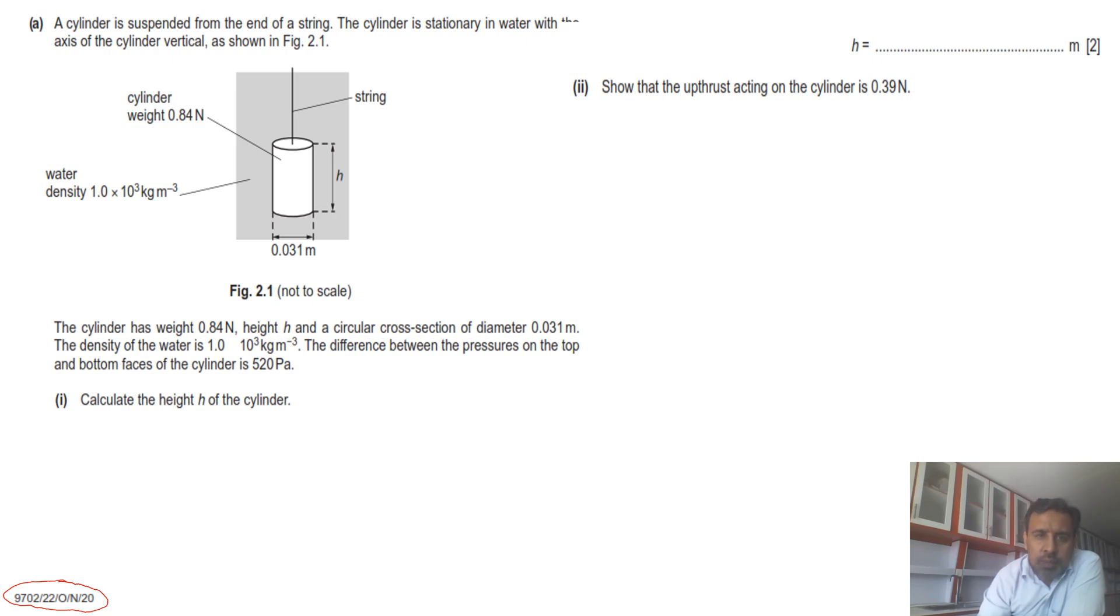This is a cylinder which is placed inside the water. It is submerged. There's a force acting on it, its weight, which is definitely downward. This force is given. The density of the water is given, and the most important thing: the cylinder is stationary, means the forces are balanced.